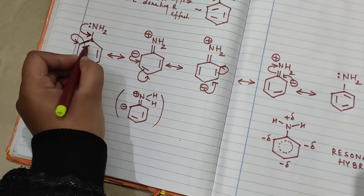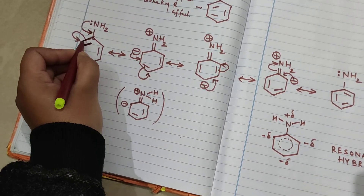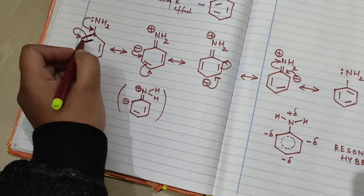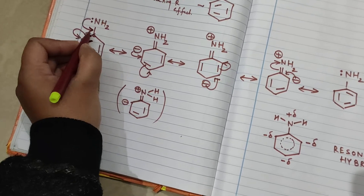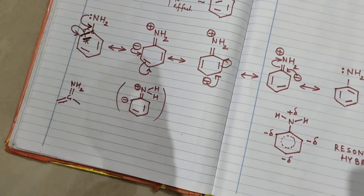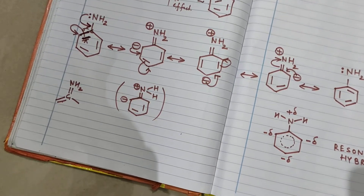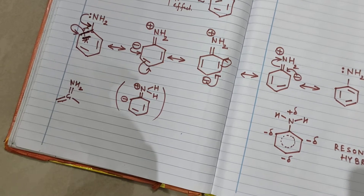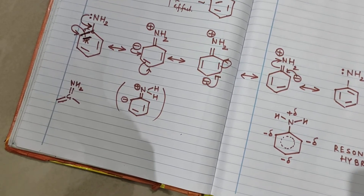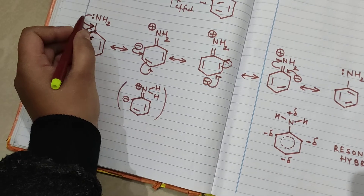Looking at the two bonds present here — one sigma and one pi — the question is: why does only the pi bond break and not the sigma bond? It is because sigma bonds are stronger than pi bonds. So the pi bond is broken and the sigma bond remains as it is, with those two electrons moving along.